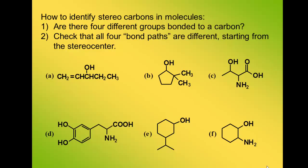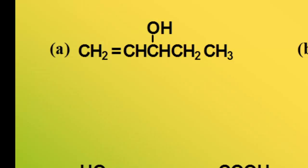Now I'd like to show you how to identify stereocenters in molecules. To be sure you're answering whether there are four different groups bonded to a carbon, check that all four bond paths are different starting from the stereocenter. In the early stages when you're analyzing organic molecules for stereocenters, I encourage you to draw the Lewis structure for the molecule.